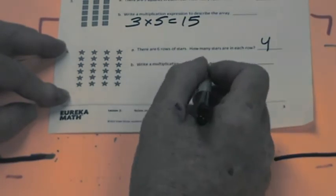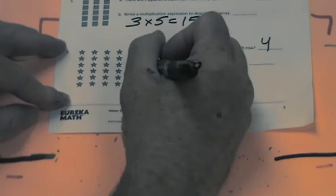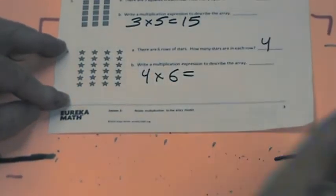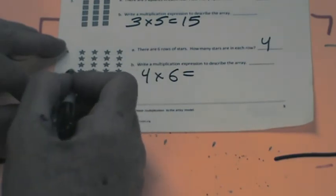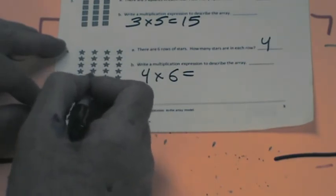Write a multiplication expression that describes this array. Well, we have four this way and six this way. So let's do four times six. And what does four times six equal? Well, we can go one, two, three, four, five, six, seven, eight, nine, ten, eleven, twelve, thirteen, fourteen, fifteen, sixteen, seventeen, eighteen, nineteen, twenty.